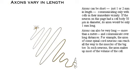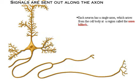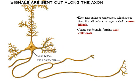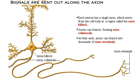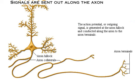In such neurons, the axon makes up most of the volume of the cell. In general, the longest axons are associated with the largest cell bodies. Each neuron has a single axon, which arises from the cell body at a region called the axon hillock. Axons can branch, forming axon collaterals. At their terminal ends, axons can branch profusely, forming thousands of endings called axon terminals. The action potential is generated at the axon hillock and conducted along the axon to the axon terminals. Click the axon hillock to see the action potential.